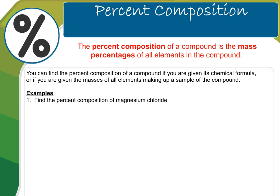The percent composition of a compound is the mass percentages of all elements in the compound. You can find the percent composition of a compound if you're given its chemical formula, or if you're given the masses of all elements making up a sample of a compound.